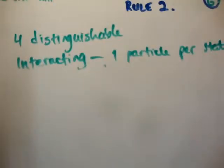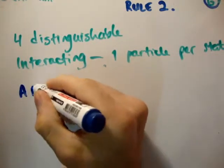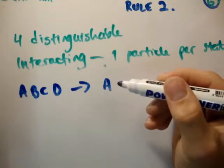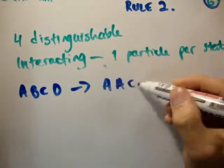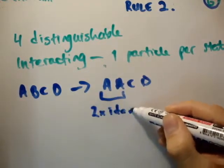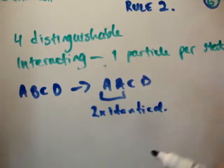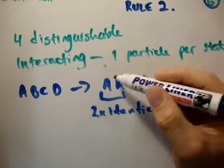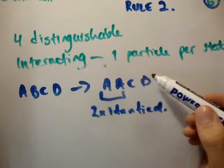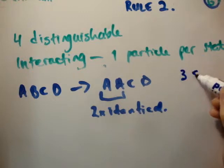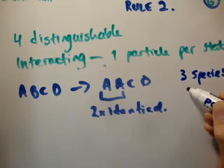But this time, I want to go from A, B, C, D to A, A, C, D. So these are your 2 times identical. We went from 4 distinguishable to, now we have 3 distinguishable, namely we have A, C, and D, but we have 2 of letter A. So we could say we have 3 species of particle.